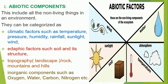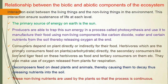Abiotic components include all the non-living things in an environment. They can be categorized as climatic factors such as temperature, pressure, humidity, rainfall, sunlight, and wind; edaphic factors like soil; topographic factors like rocks, mountains, and hills; and inorganic compounds such as oxygen, water, carbon, and nitrogen. Examples from the image include wind, water, sunlight, atmosphere, soil, and temperature.